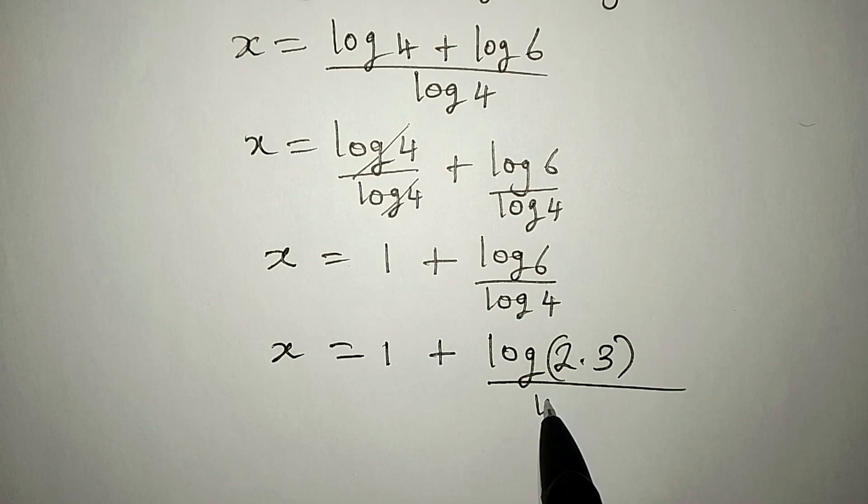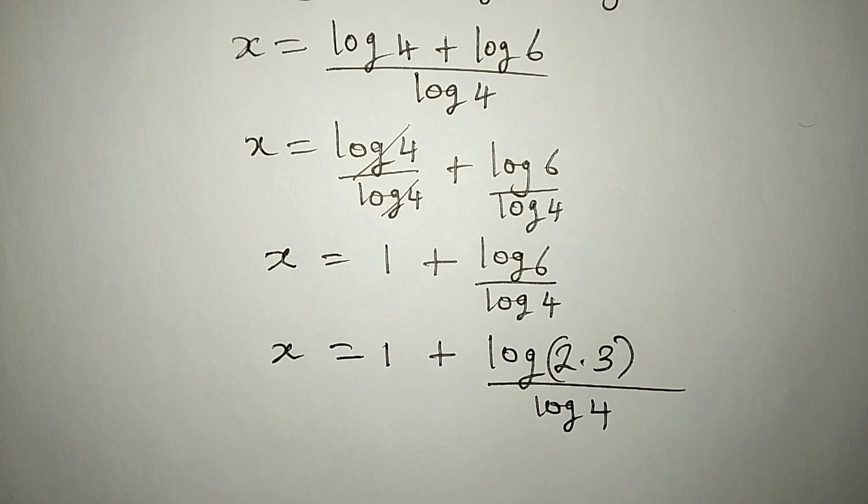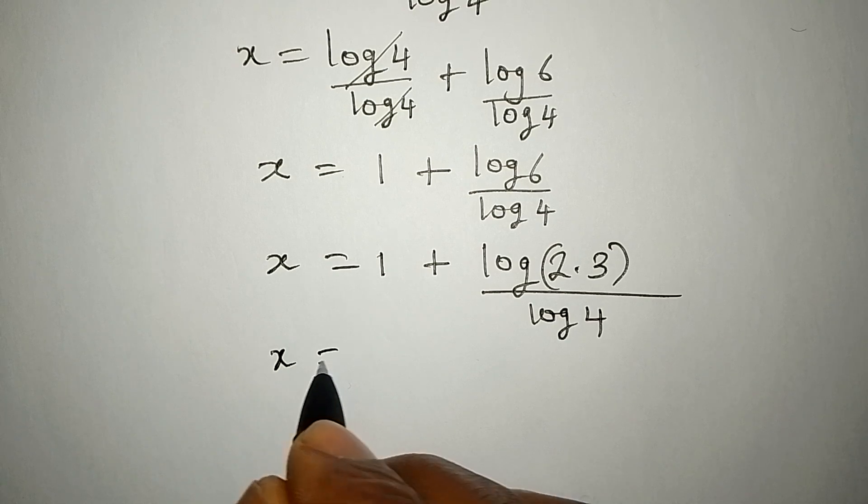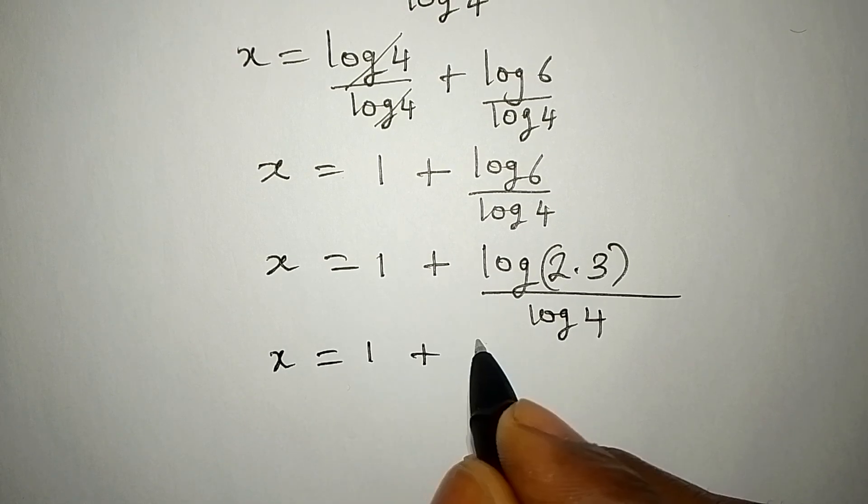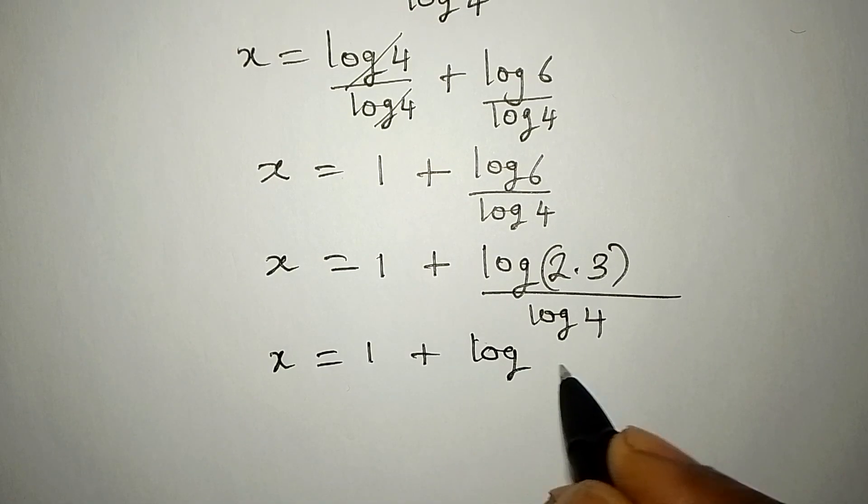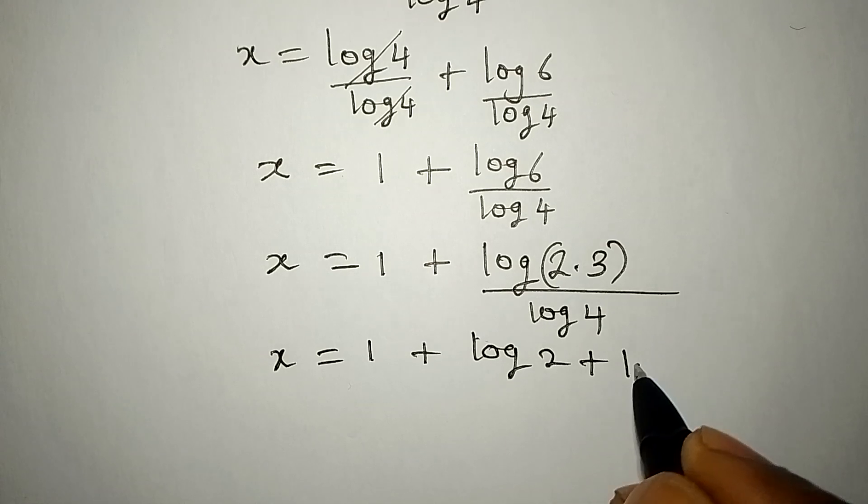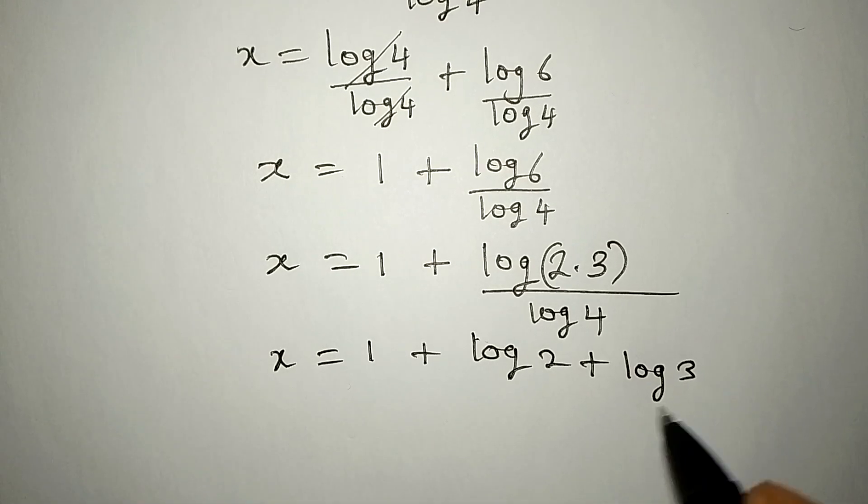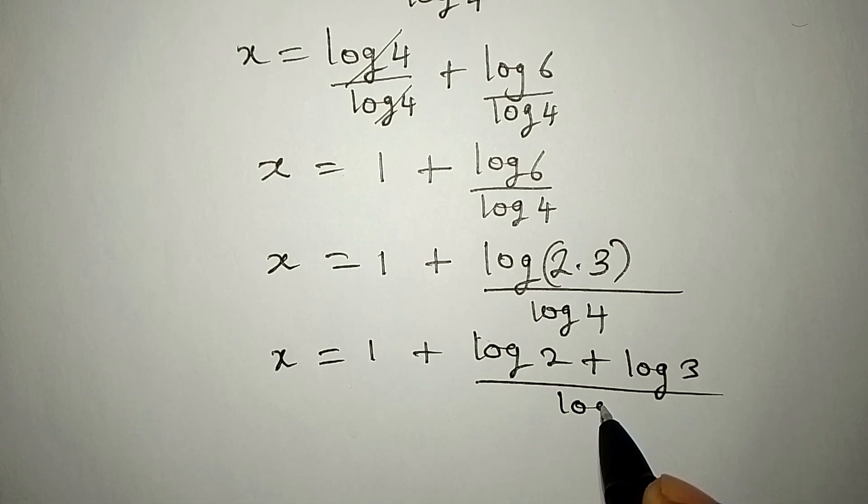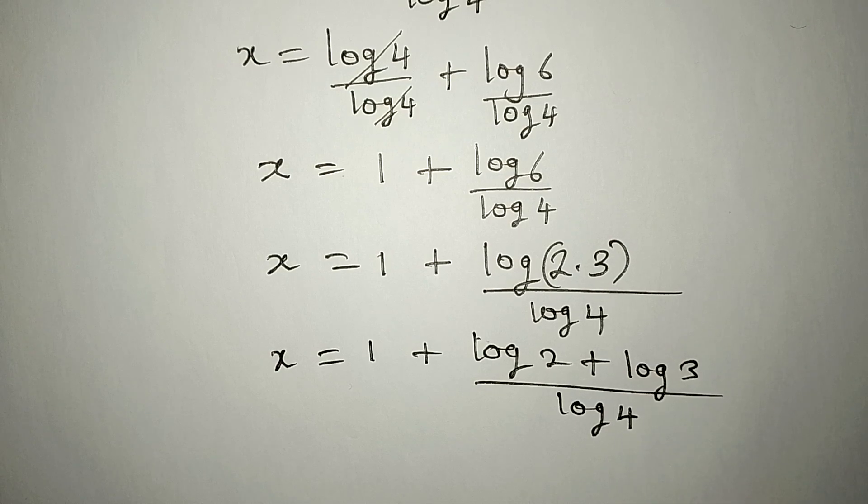Let's have log 4 first. So, from here, x will now be equal to 1 plus log 2 plus log 3. All of this is over log 4, just like we did before.